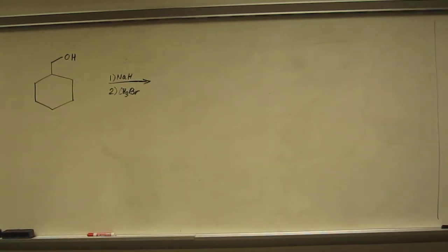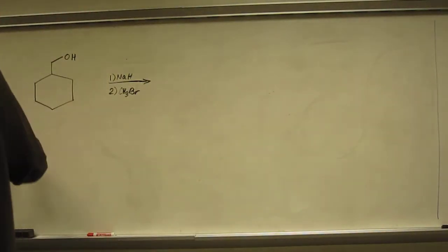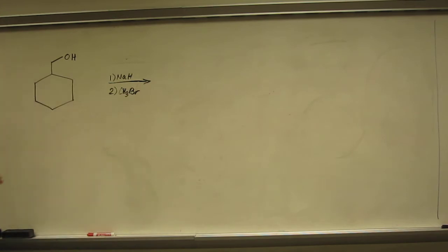Let's do this one as the last reaction of the day. This is another way to make an ether. We already talked about making an ether from alkene. Let's make an ether from an alcohol now.